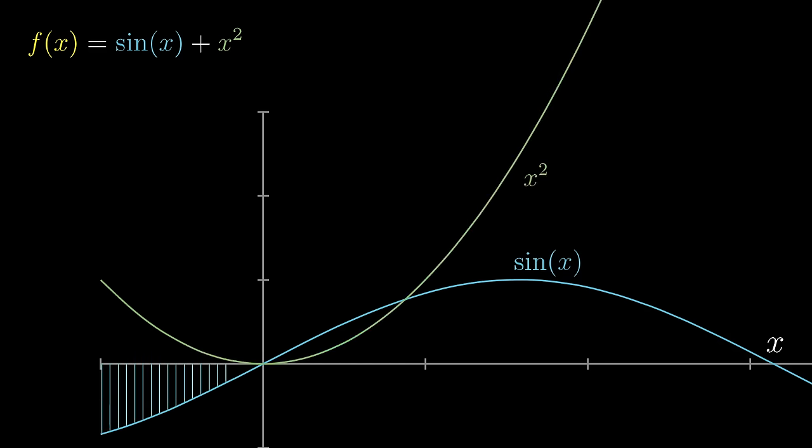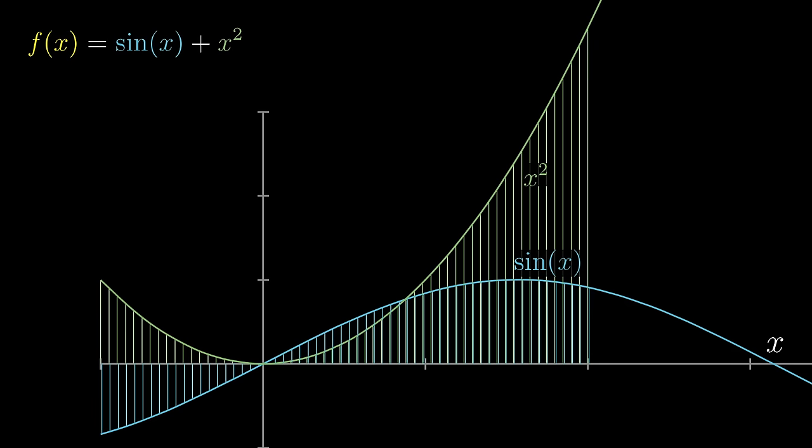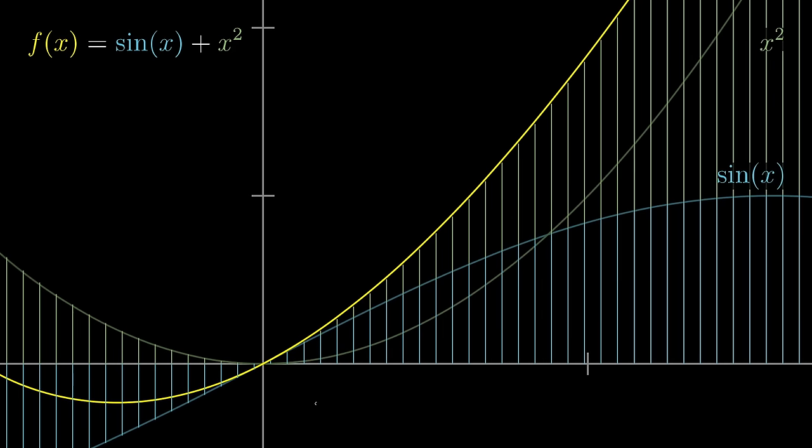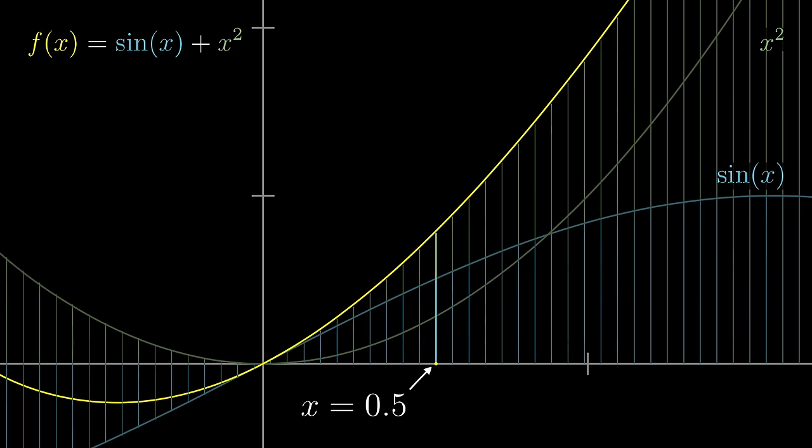It's a function where for every input you add together the values of sine of x and x squared at that point. For example, let's say at x equals 0.5. The height of the sine graph is given by this vertical bar, and the height of the x squared parabola is given by this slightly smaller vertical bar, and their sum is the length you get by just stacking them together.